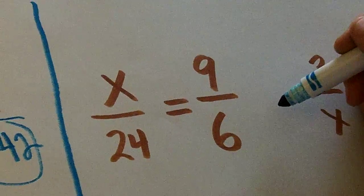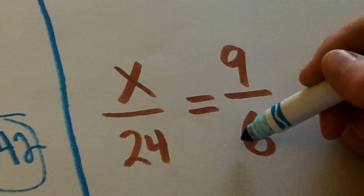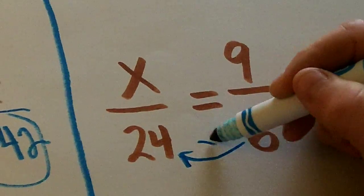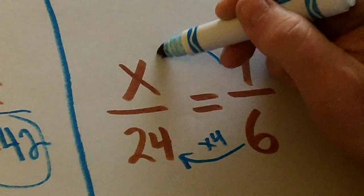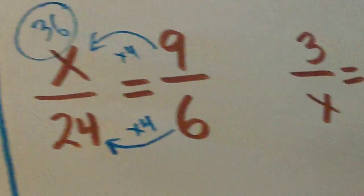How about this one? Why don't we try this? 6 times 4 is 24, 9 times 4 is 36. Well, that's pretty easy.